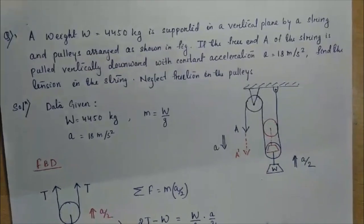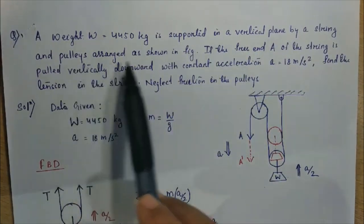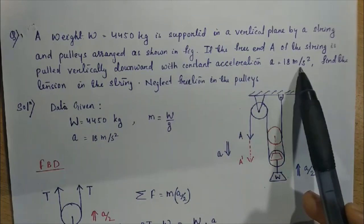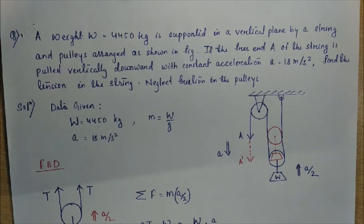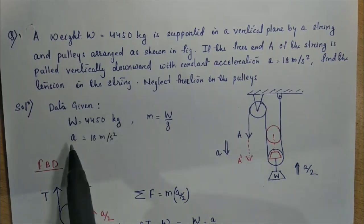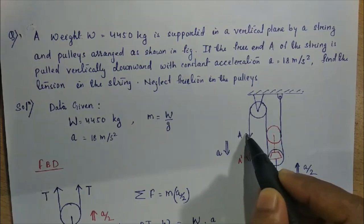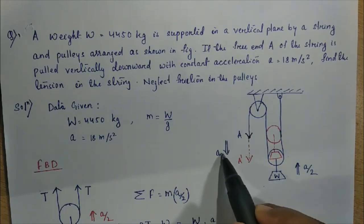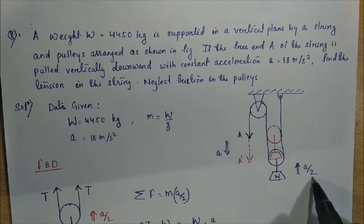Next question: a weight W equals 4450 kg is supported in a vertical plane by a string and pulleys. The free end of the string is pulled vertically downward with constant acceleration A equals 18 m/s². Find the tension in the string and the tension in the pulley. When the free end moves with acceleration A, the pulley carrying the weight moves with acceleration A/2 — as discussed previously in virtual work.